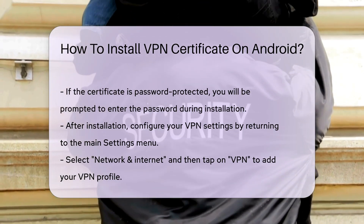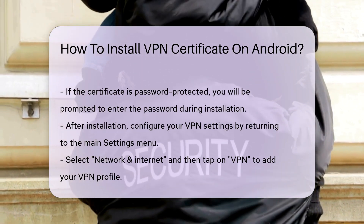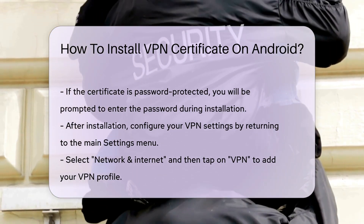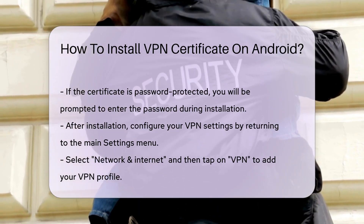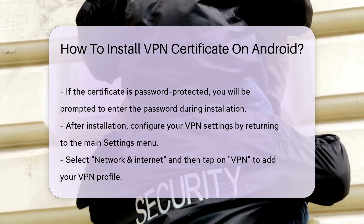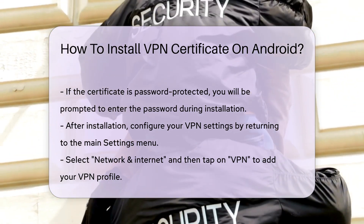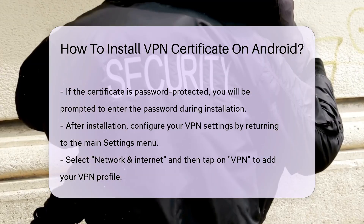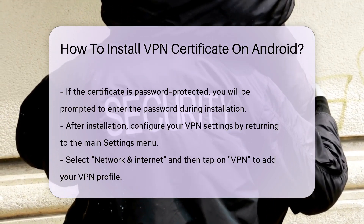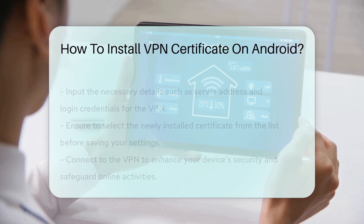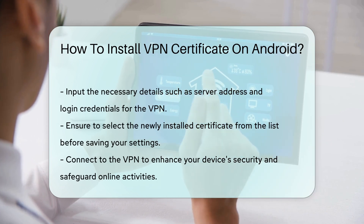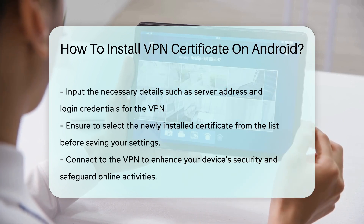Once installed, you can configure your VPN settings. Go back to the main Settings menu and select Network & Internet. Then tap on VPN to add your VPN profile. Input the required details, including the server address and your login credentials. Ensure you select the newly installed certificate from the list.